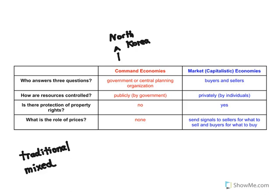Prices send signals to both buyers and sellers about what to purchase and what to sell. If I go into a store and see something overpriced and don't buy it, and other consumers agree, it sends a signal to sellers to lower the price. For example, when the Nintendo Wii U came out, it was overpriced — a lot of people were not buying it, and Nintendo was forced to lower the price to generate sales. Prices basically coordinate where resources and goods and services should go, which is the function the government plays in a command economy.